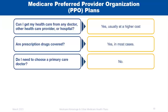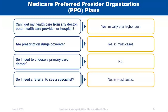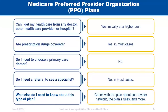With a PPO plan, you do not need a referral to see a specialist in most cases, giving you more control than an HMO. You should still understand the provider network, the plan's rules, whether your doctor is in the network, what hospital is available nearby, and the plan's appeals process.